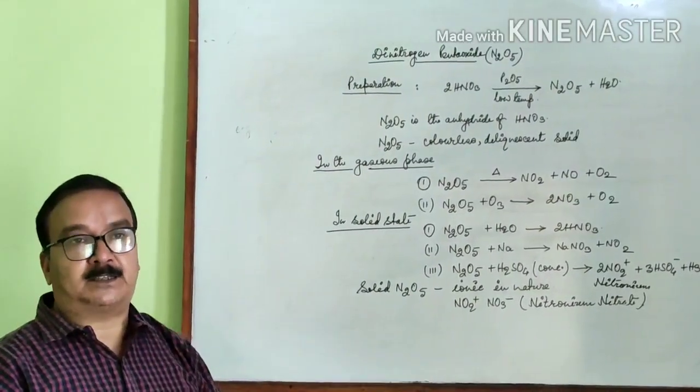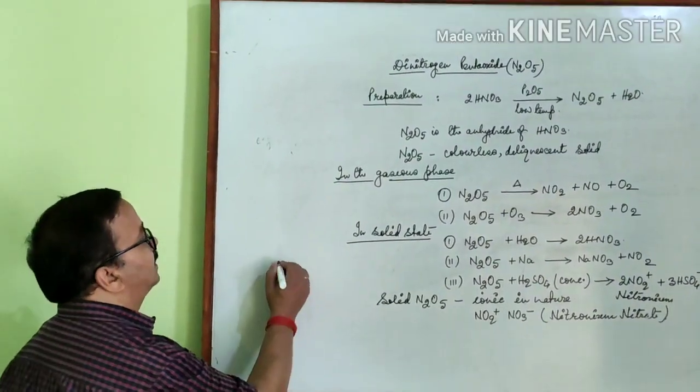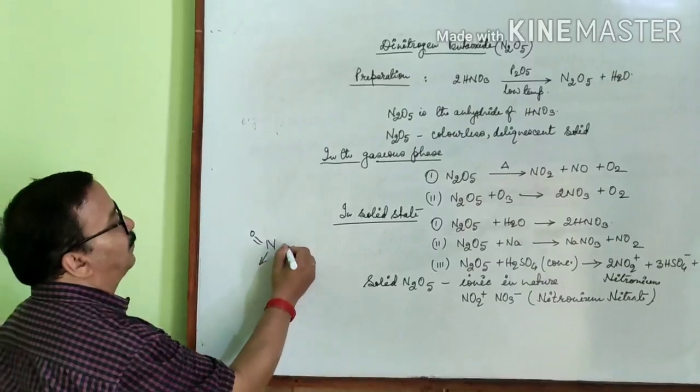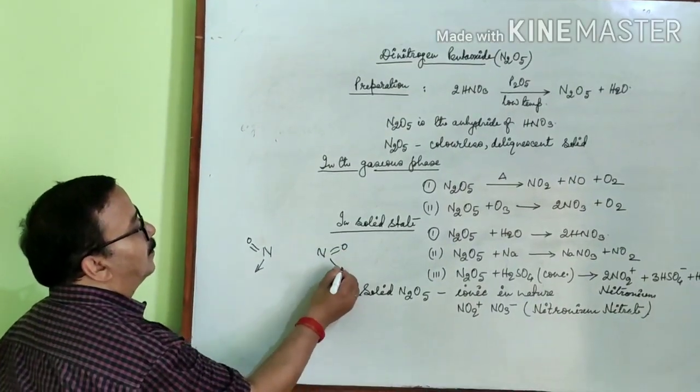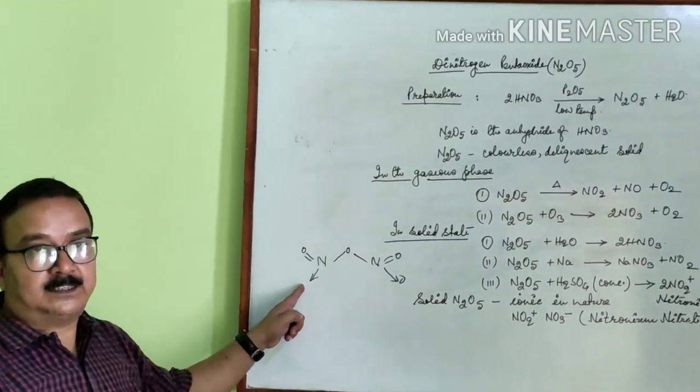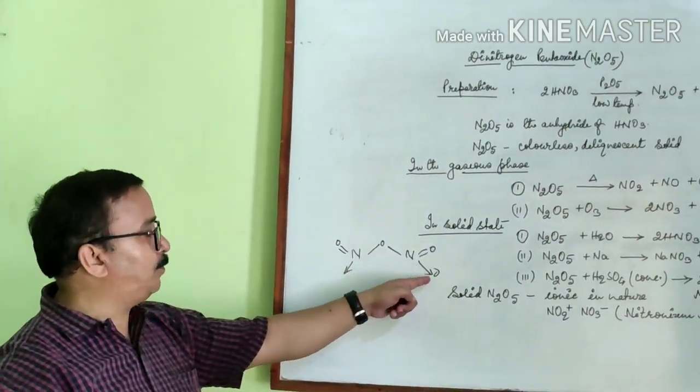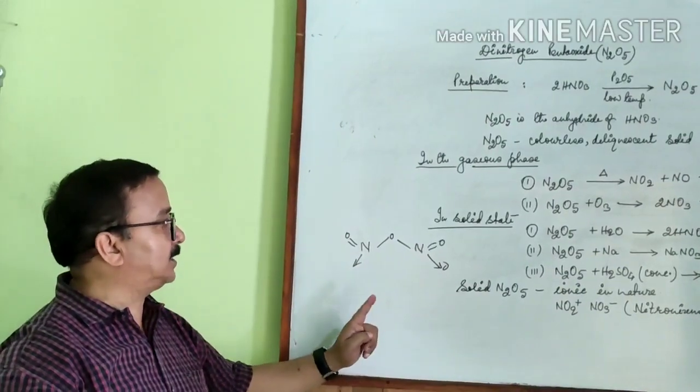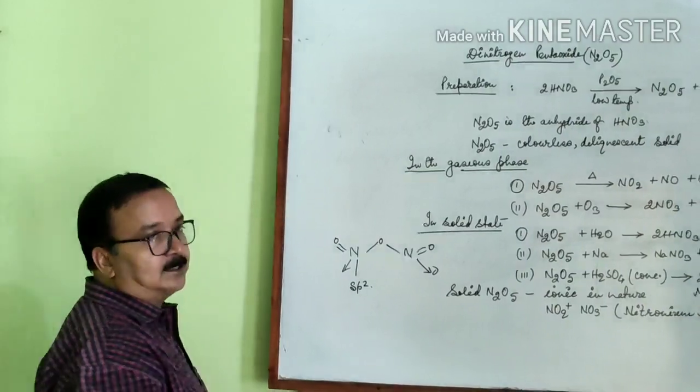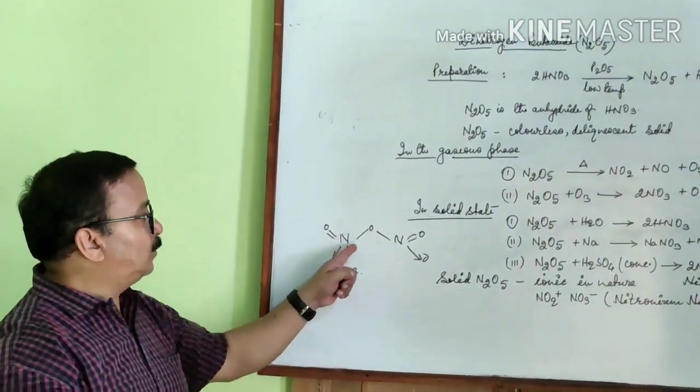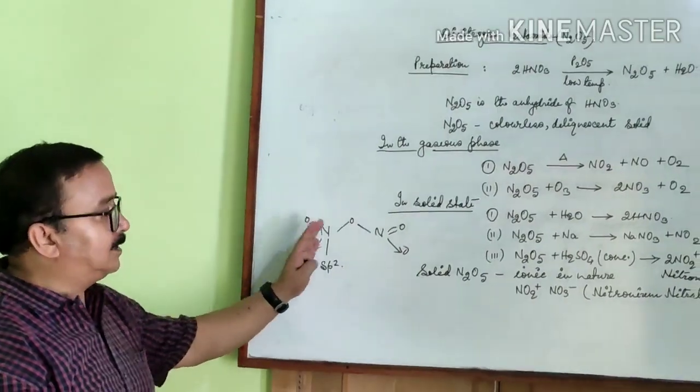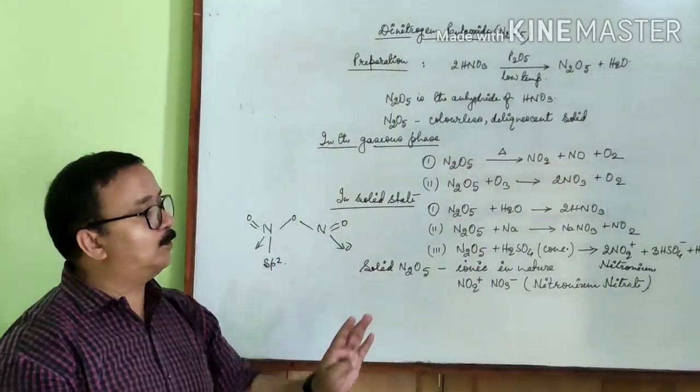Now N2O5 in the gaseous phase has the following structure. This is the structure of N2O5. In the gaseous phase N2O5 has the following structure. Each nitrogen atom is sp2 hybridized. Both the nitrogen atoms are sp2 hybridized and this is the structure of N2O5.